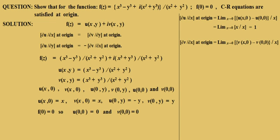∂v/∂x at origin is equal to the limit as x→0 of [v(x,0) − v(0,0)] / x. Since v(x,0) = x and v(0,0) = 0, this becomes the limit as x→0 of x/x, which is also equal to 1.